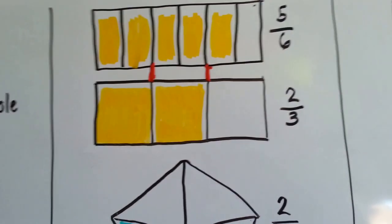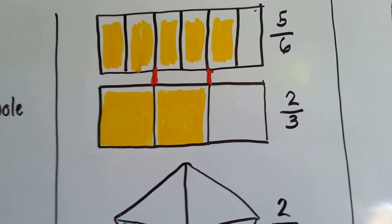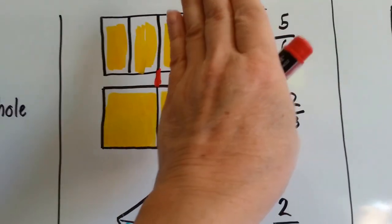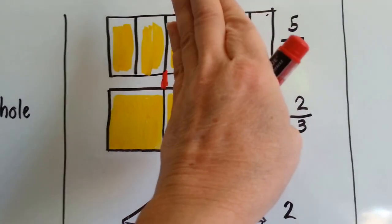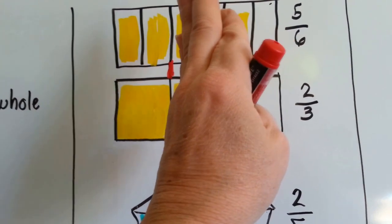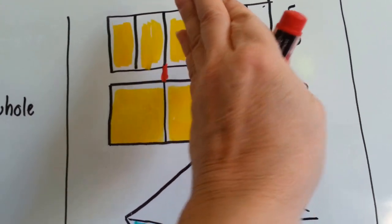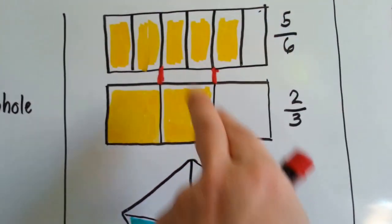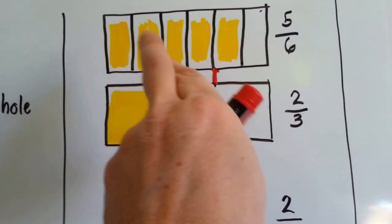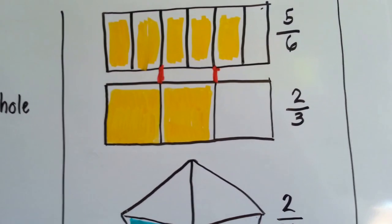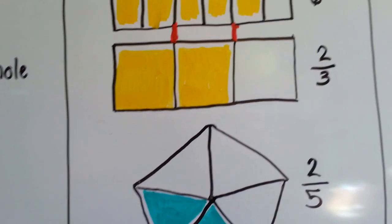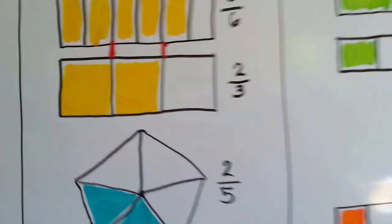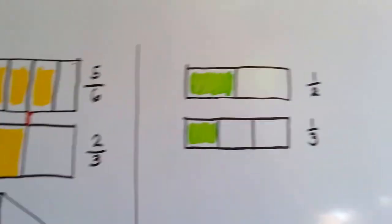See? These lines kind of line up. Two sixths is the same as one of the thirds. Equivalent fractions — we're going to be talking about that.